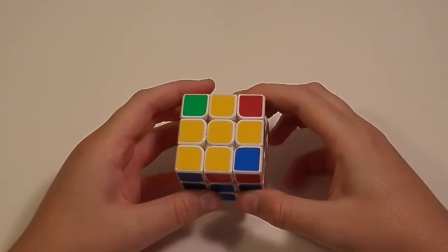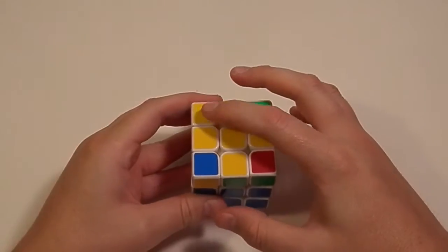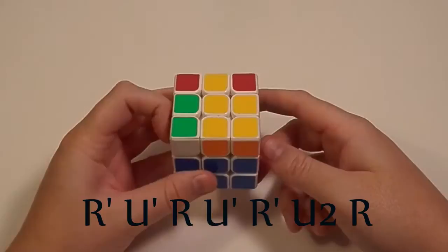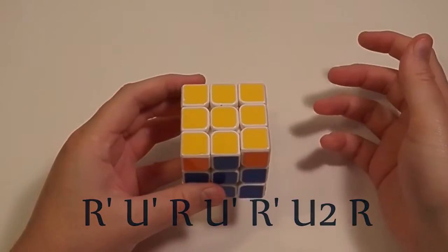There's two different algorithms for Anti-Sune that I use. One is with the oriented corner in the top left and that is R' U' R U' R' U2 R.